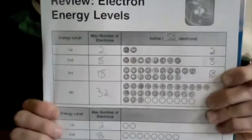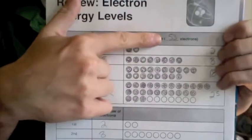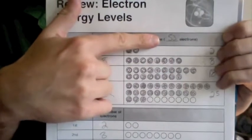So when we look at iodine, and I've already filled this in, iodine has 53 electrons because its atomic number is 53 on the periodic table.